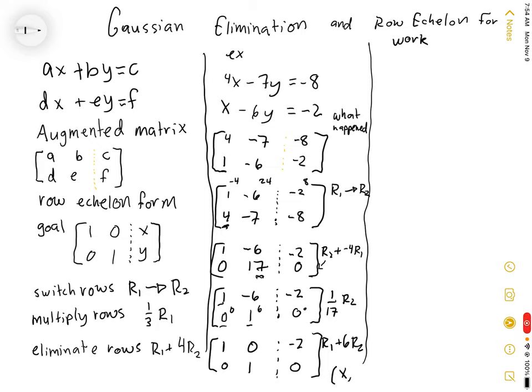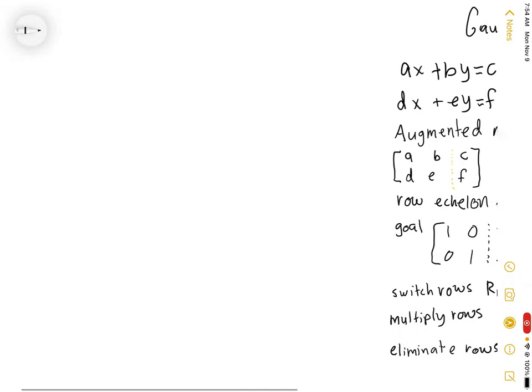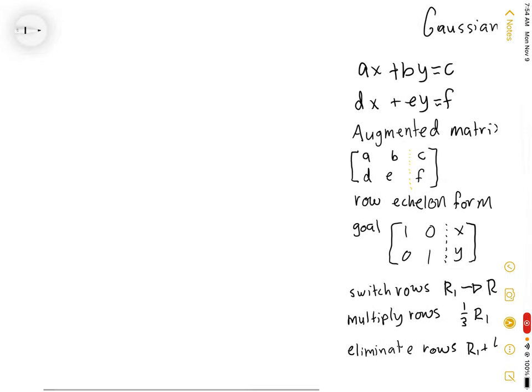As always, we have to write this x comma y, or negative 2, 0. I'm going to go ahead and show you how this works with a much bigger system.